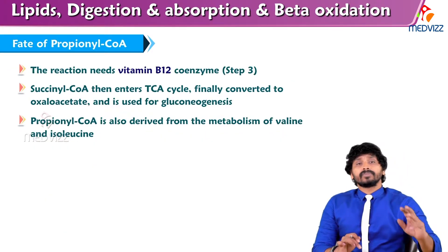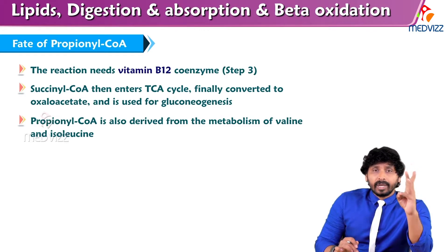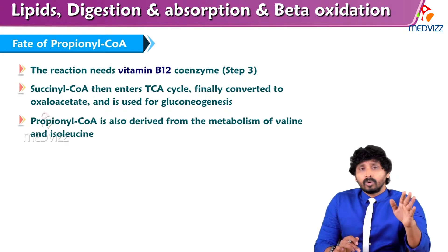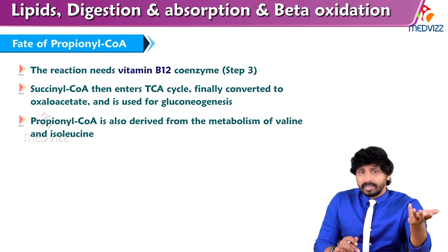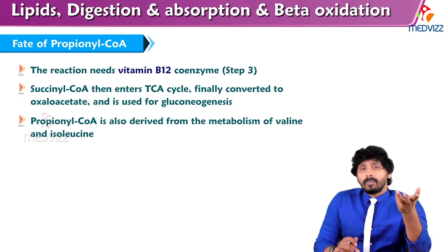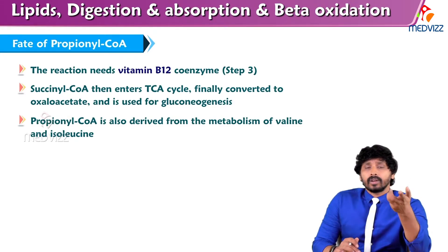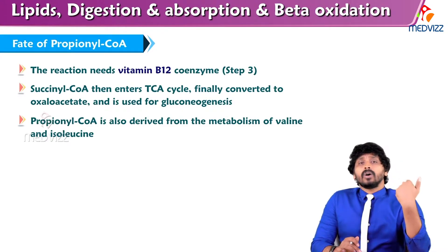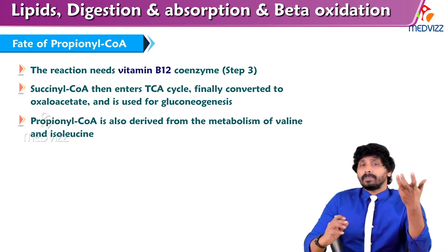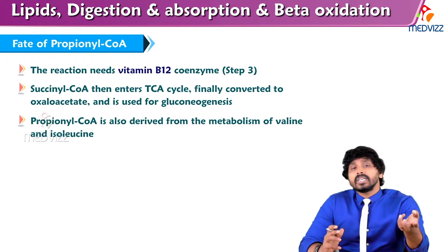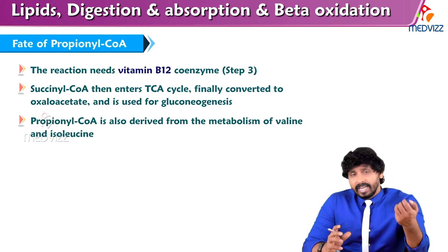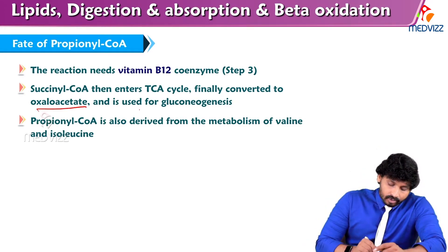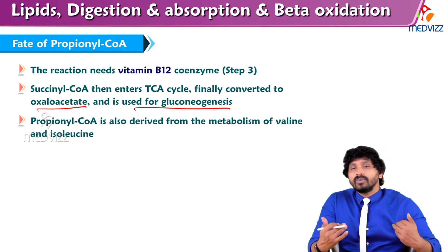The third step — the mutase reaction — requires vitamin B12 (cobalamin). L-methylmalonyl-CoA has to get rid of its methyl group, and vitamin B12 cobalamin comes into action. It accepts the removed methyl group from methylmalonyl-CoA and is converted into methylcobalamin. That is the reason: if a person is suffering from B12 deficiency, they cannot utilize propionyl-CoA for energy production. Succinyl-CoA enters the TCA cycle, finally converted to oxaloacetate and used for gluconeogenesis and energy production. Propionyl-CoA is also derived from metabolism of valine and isoleucine.